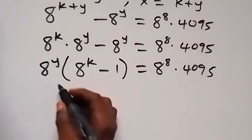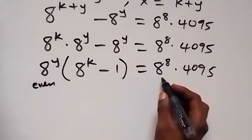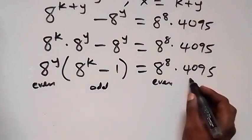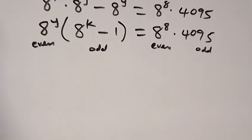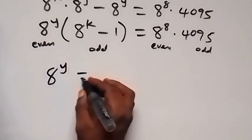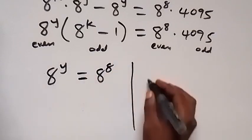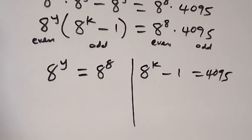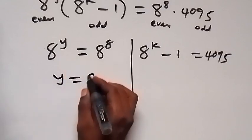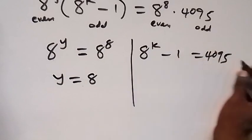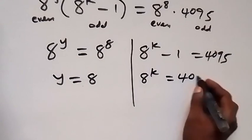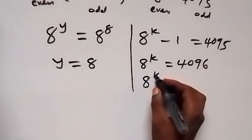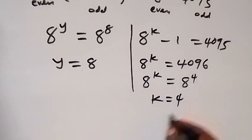Now, 8 raised to power k minus 1 is even, and 8 raised to power k is also even. So we can equate even to even, and the other factor is odd. 4095 is also odd. When we equate, we get 8 raised to power y equals 8 raised to power 8, so y equals 8. On the other side, 8 raised to power k minus 1 equals 4095, so 8 raised to power k equals 4096. Writing 4096 in base 8, we get 8 raised to power 4, so k equals 4.